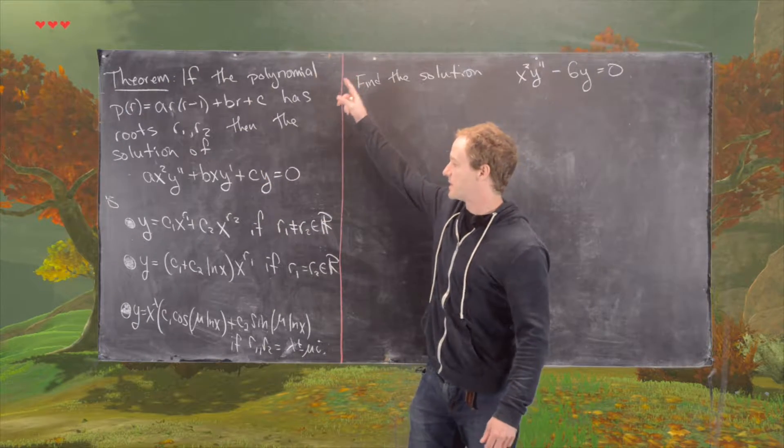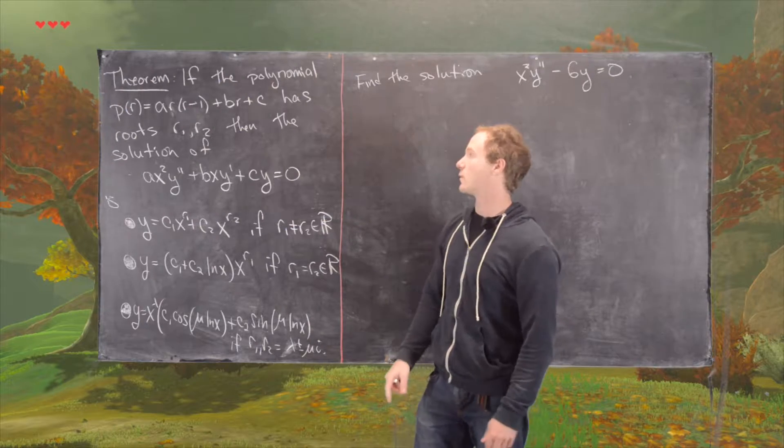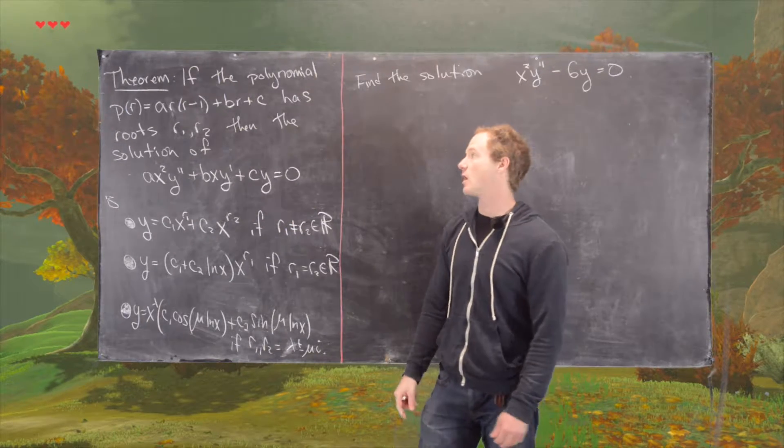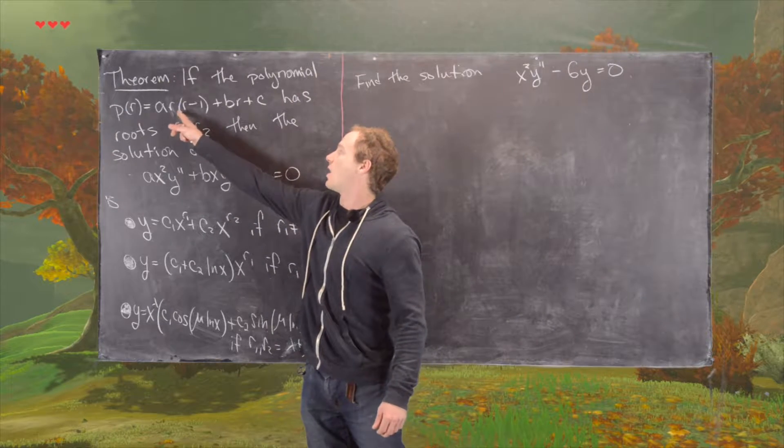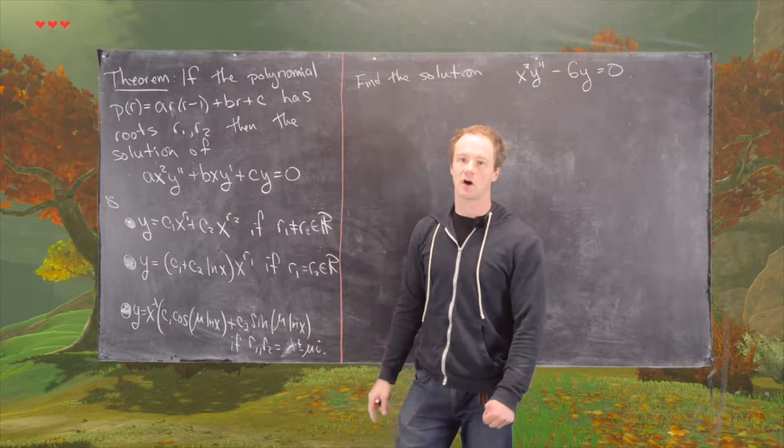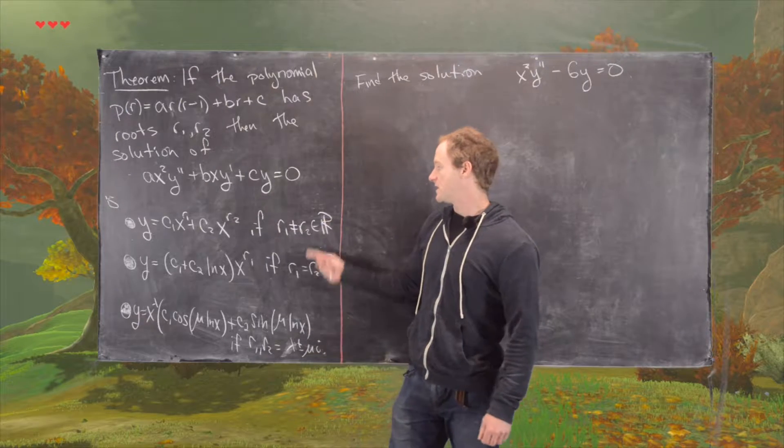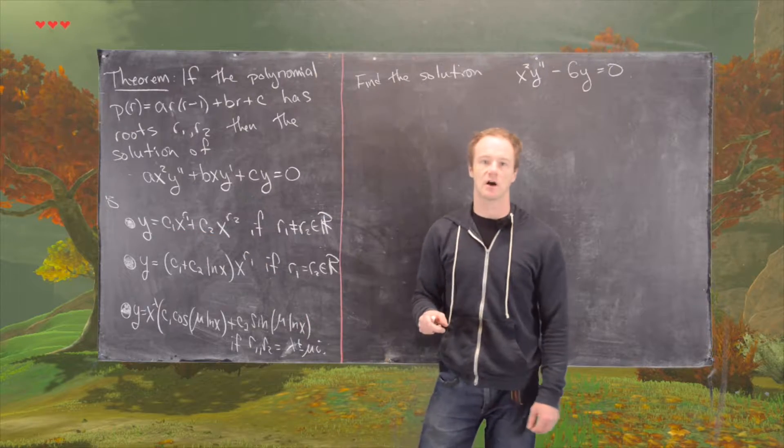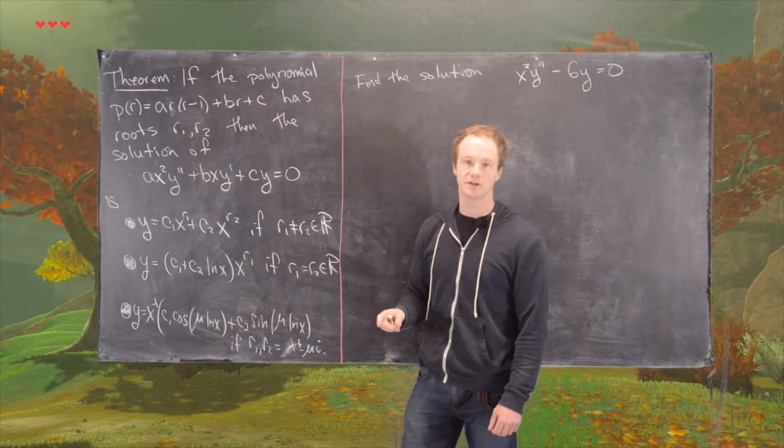Their solutions follow the following format. So if pr is equal to this polynomial in the variable r of a r times r minus 1 plus br plus c, and it has roots r1 and r2, then if you have distinct real roots, then you have a solution that's c1x to the r1 plus c2x to the r2.